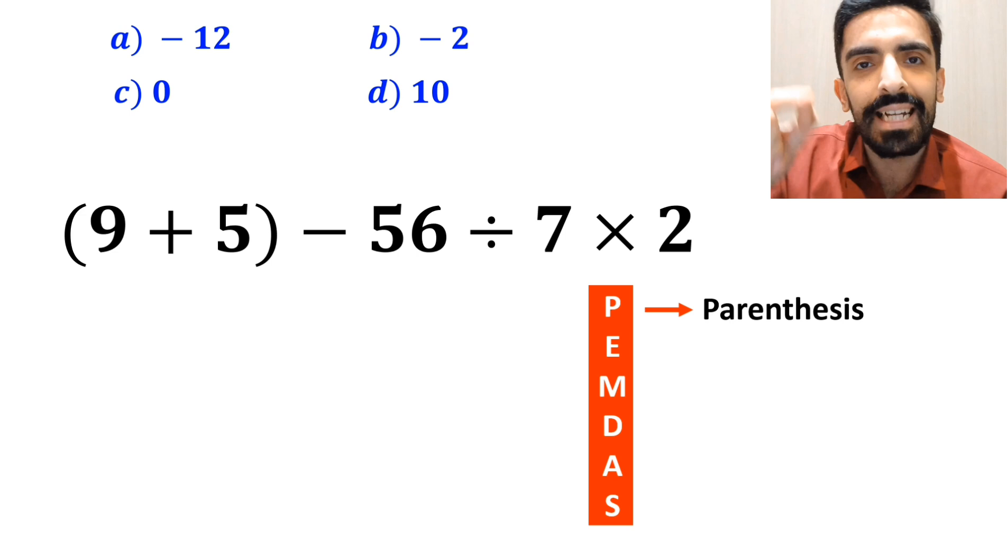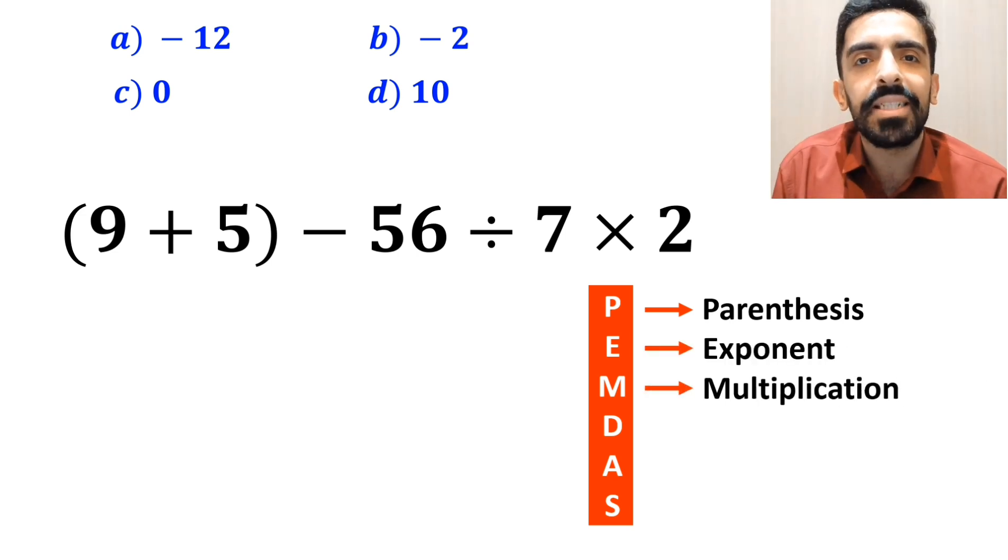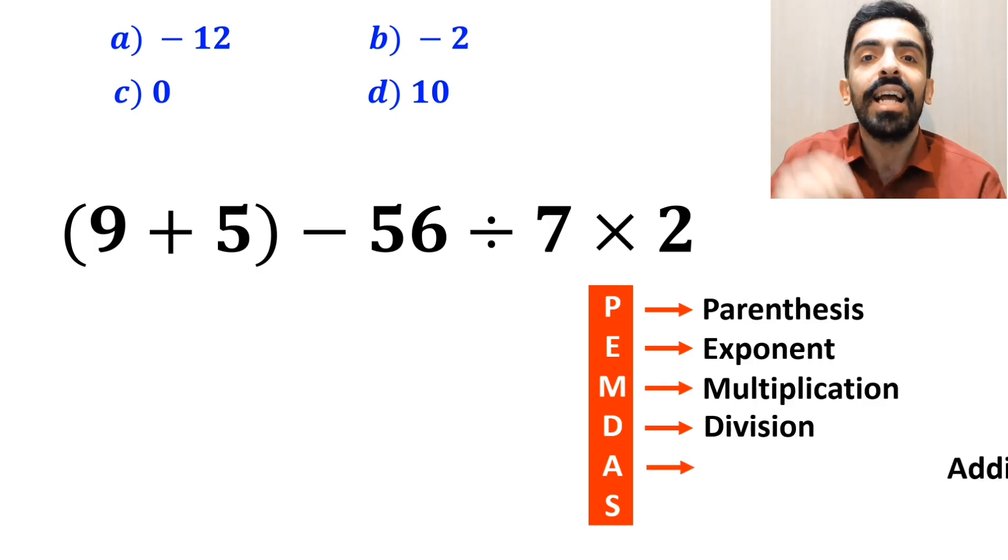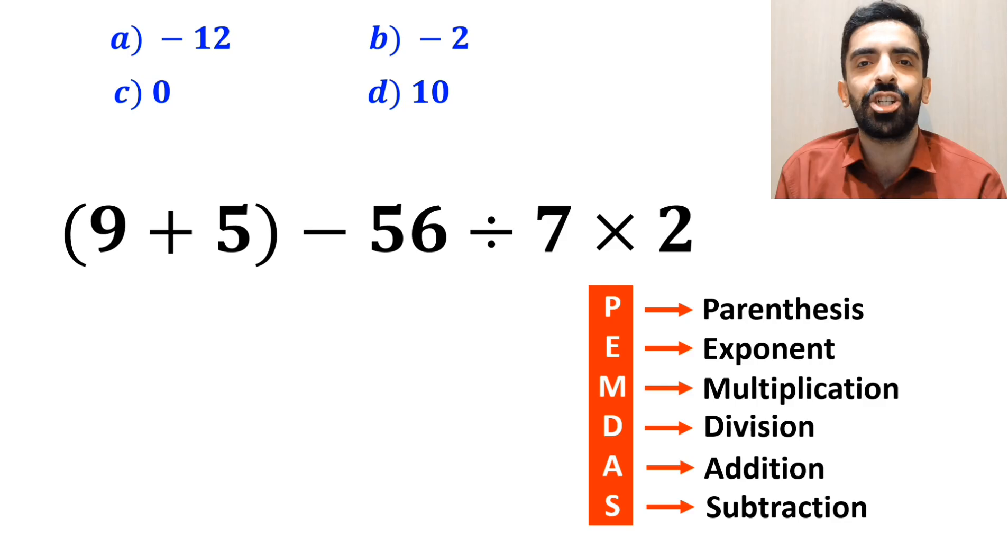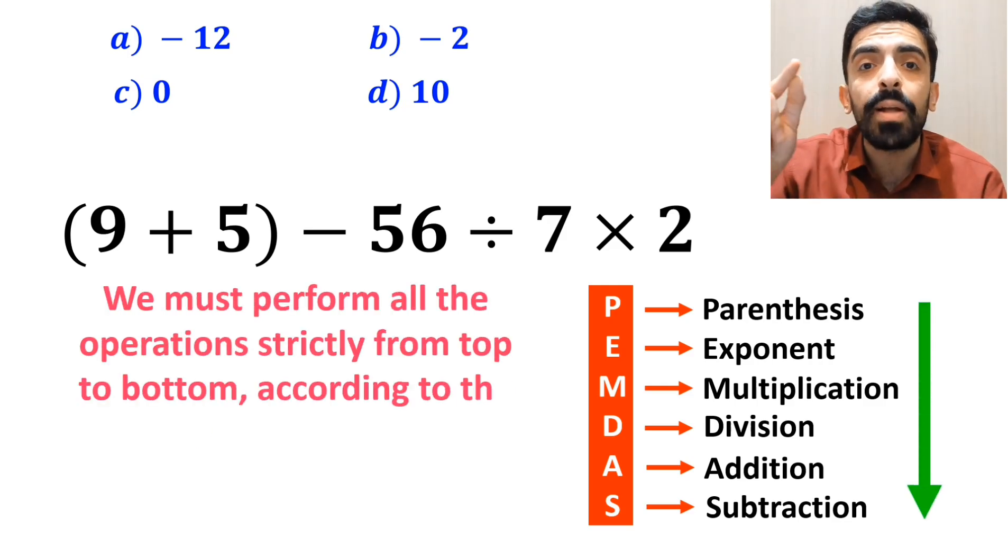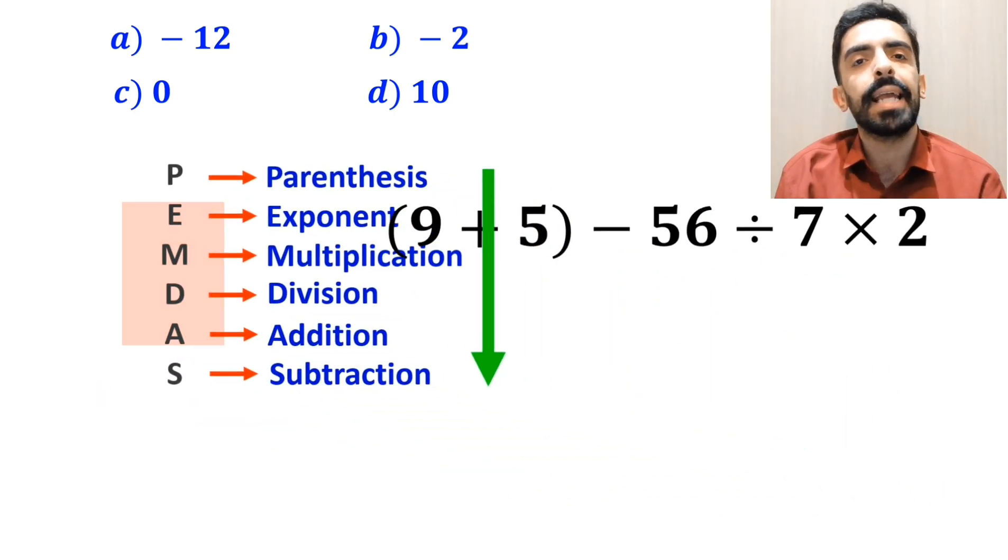In this rule, P stands for parentheses, E stands for exponent, M stands for multiplication, D stands for division, A stands for addition, and S stands for subtraction. We must perform all the operations strictly from top to bottom according to the PEMDAS rule.